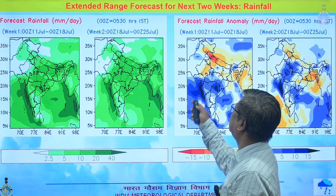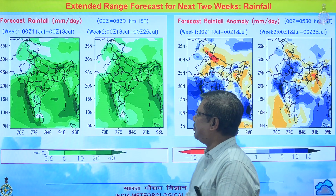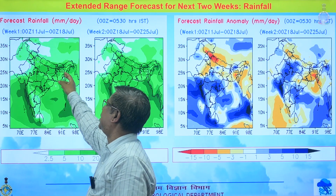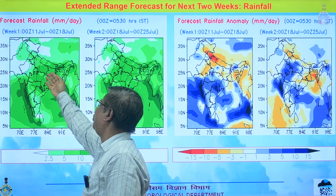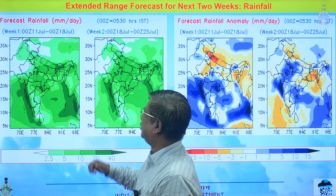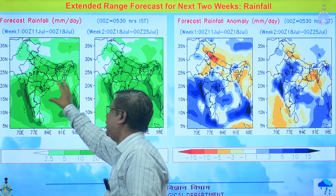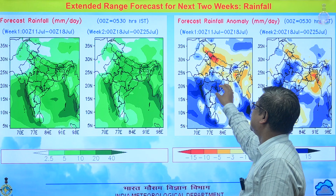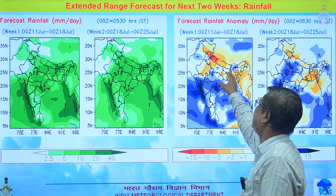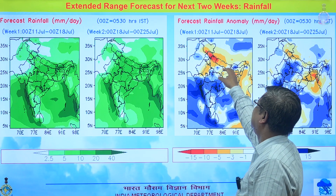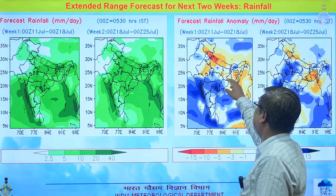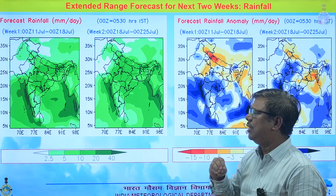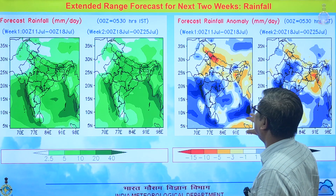For the extended two-week forecast, in the first week, green-shaded rainfall is expected over the west coast region, central India, parts of northwest India, Uttar Pradesh, Bihar, West Bengal, and northeastern states. The anomaly map shows positive anomaly over the western coast and central India. The northwest India and Himalayan region show negative anomaly, meaning slightly below normal rainfall, but not significantly so.